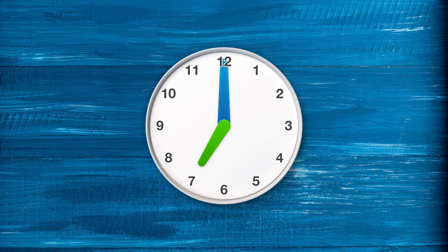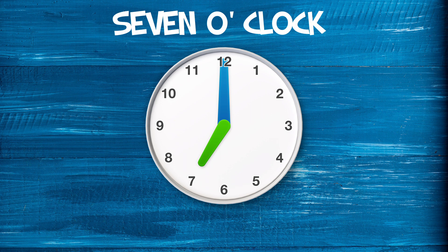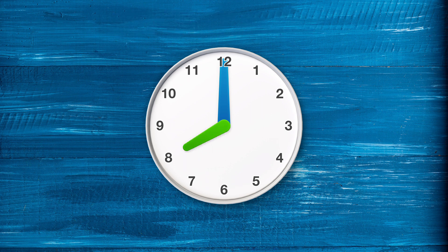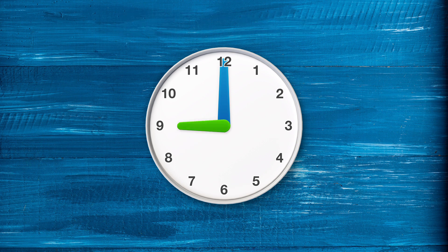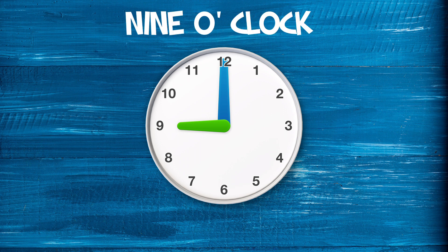When the small hand is in front of the number 7, it is 7 o'clock. When the small hand is in front of the number 8, it is 8 o'clock. When the small hand is in front of the number 9, it is 9 o'clock.